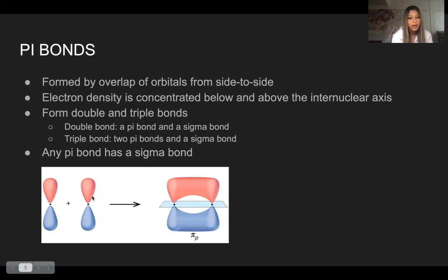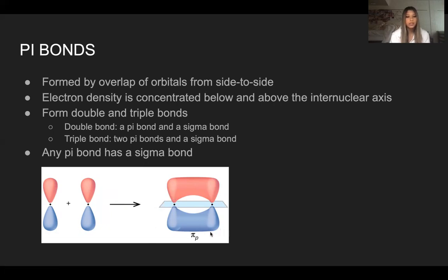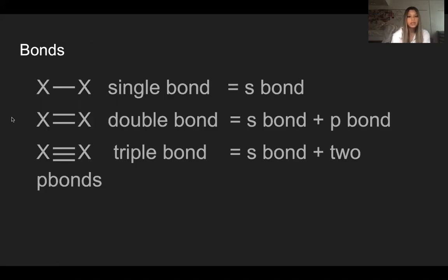We have two p orbitals and the internuclear axis is in the middle. Since it's doing a side-to-side overlap, they connect and have two bonds formed up top and below, which explains how the electron density is concentrated below and above the internuclear axis. To summarize: two atoms with one single bond have one sigma bond. The same two atoms with a double bond have one sigma and one pi bond. With a triple bond, we have one sigma bond and two pi bonds.